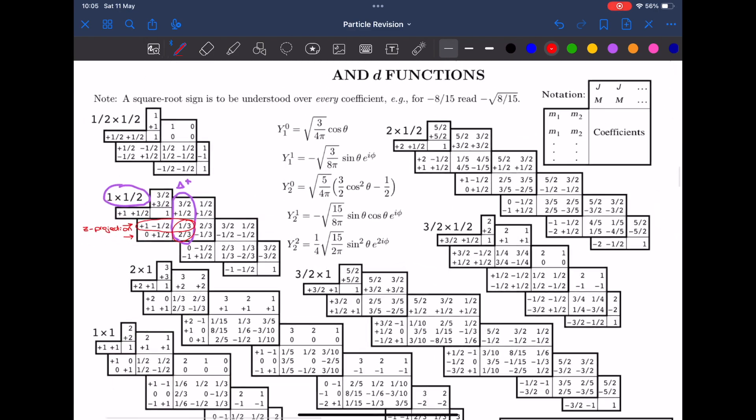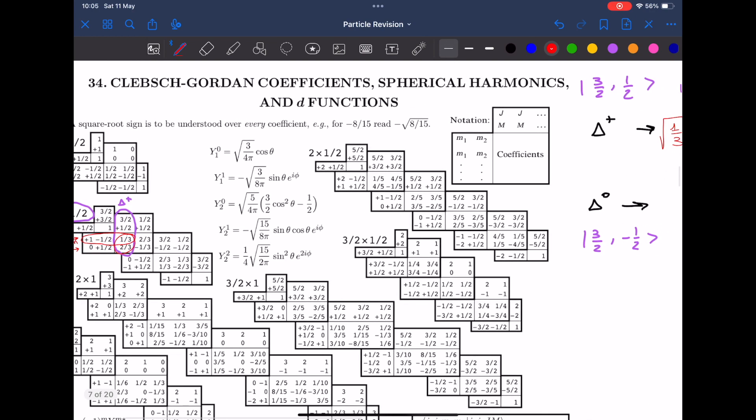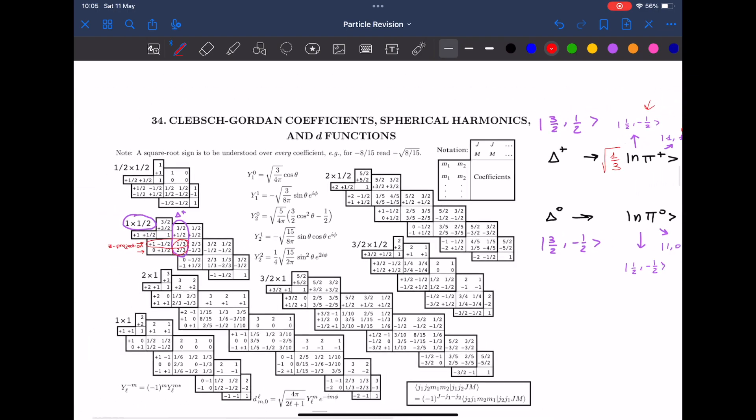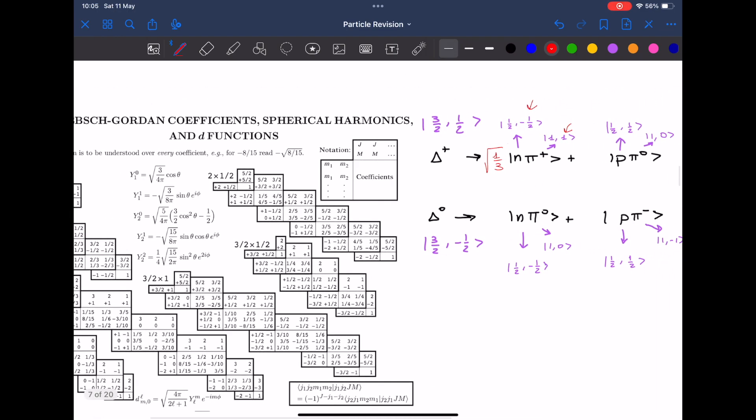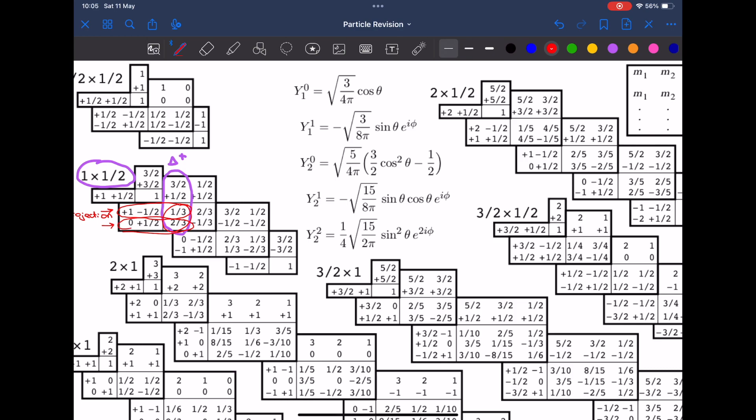Always remember to add the square root because these values are all square rooted but it would be a little bit too messy if they were written like that. And therefore the other probability for the proton and the pion zero pair will be 2 over 3.